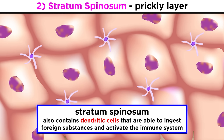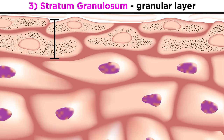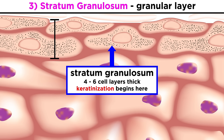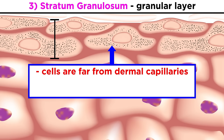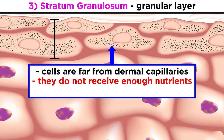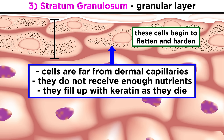Here we can also find dendritic cells, which ingest foreign substances and activate the immune system. Next is the stratum granulosum, or granular layer. This is four to six cell layers thick, and in this section keratinization begins as cells continue to move their way upwards from the basal layer. This is when the cells get far enough from the dermal capillaries below to receive sufficient nutrients, so the cells fill up with keratin as they die, and they flatten while the organelles disintegrate. This makes the cell tougher and scalier, which allows for the outer layers to better protect the body.